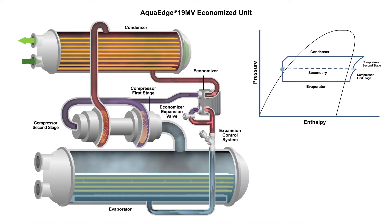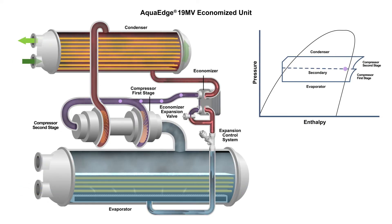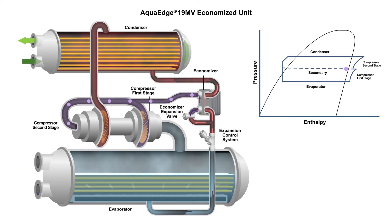Simultaneously, primary liquid flow continues through the expansion control system to become a low-pressure liquid, which enters the evaporator to complete the cycle. The intermediate pressure secondary flow vapor returns to the compressor second stage. Since the vapor only travels through half of the compression cycle, this work requires less energy input and improves the efficiency of the entire system.